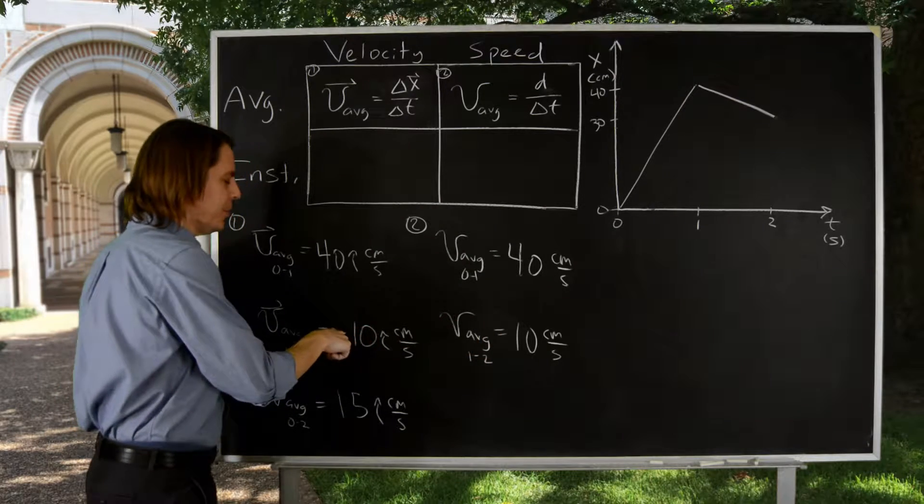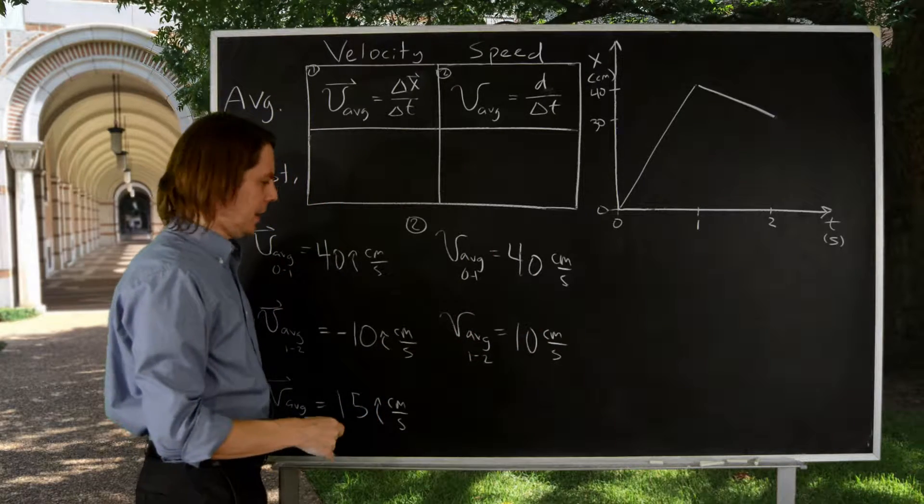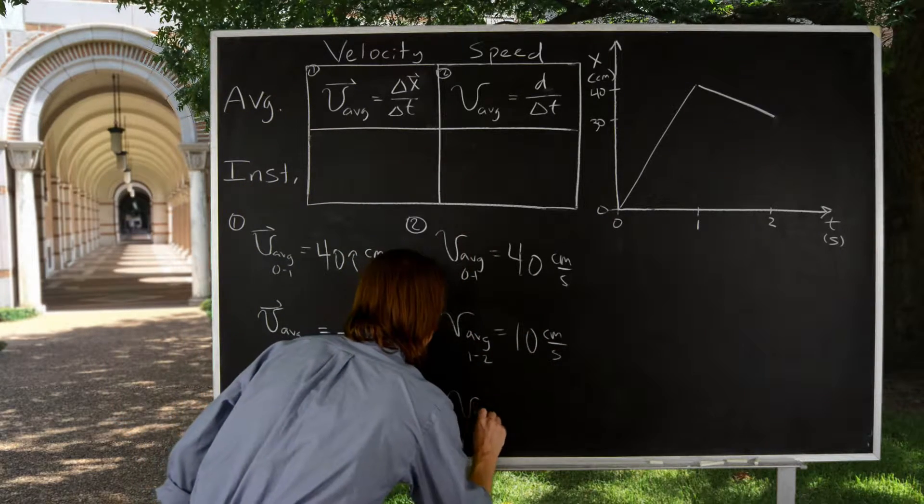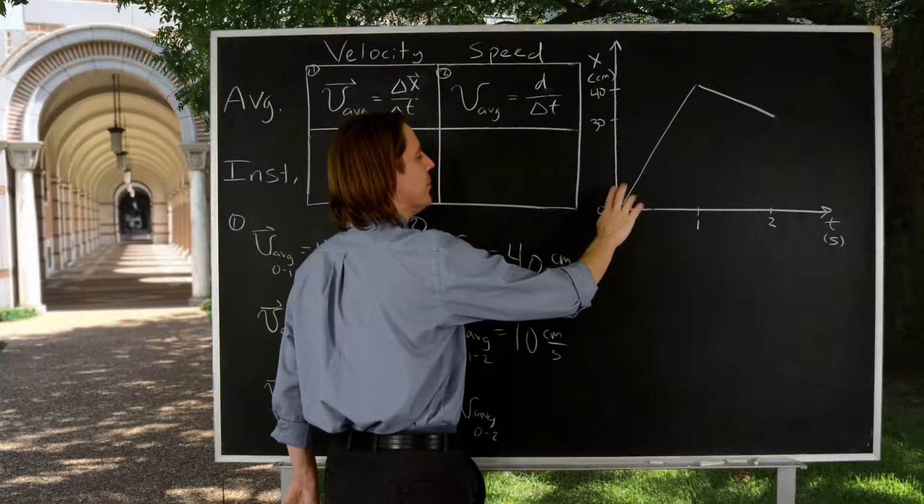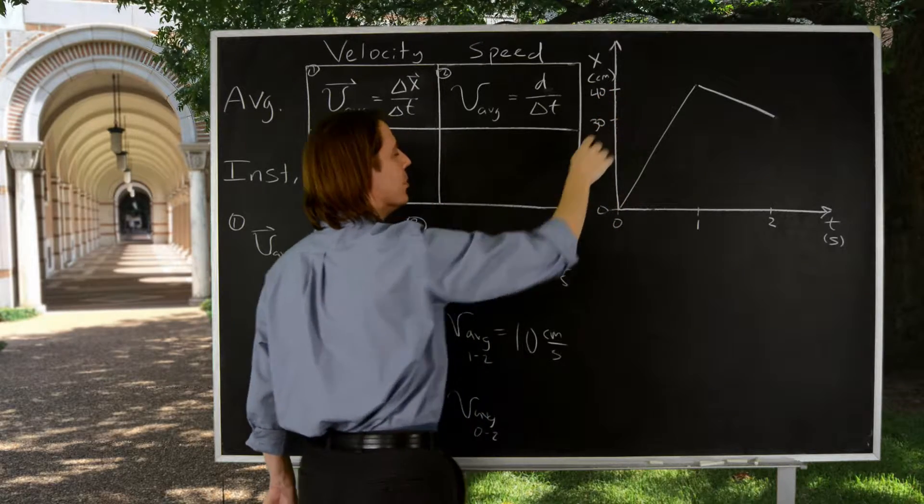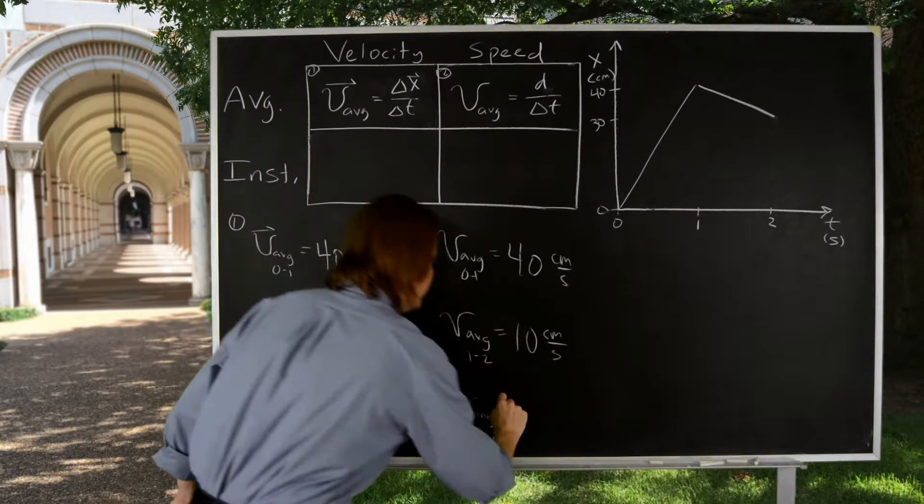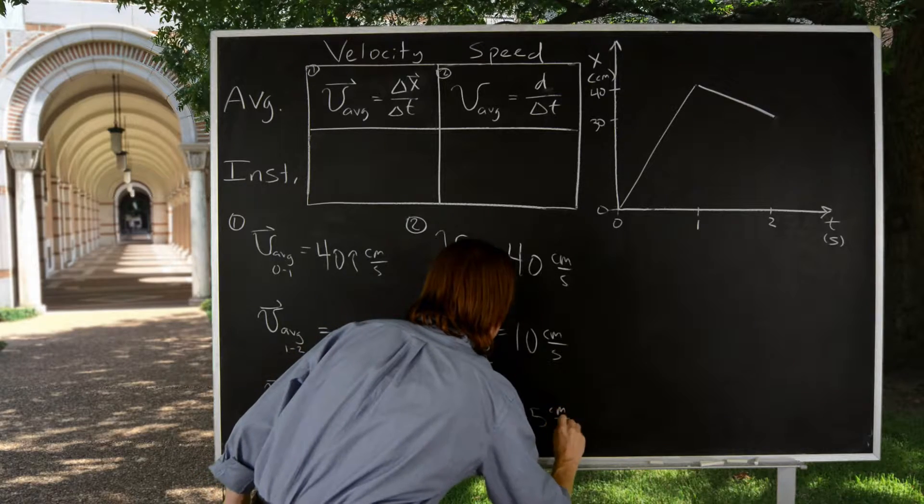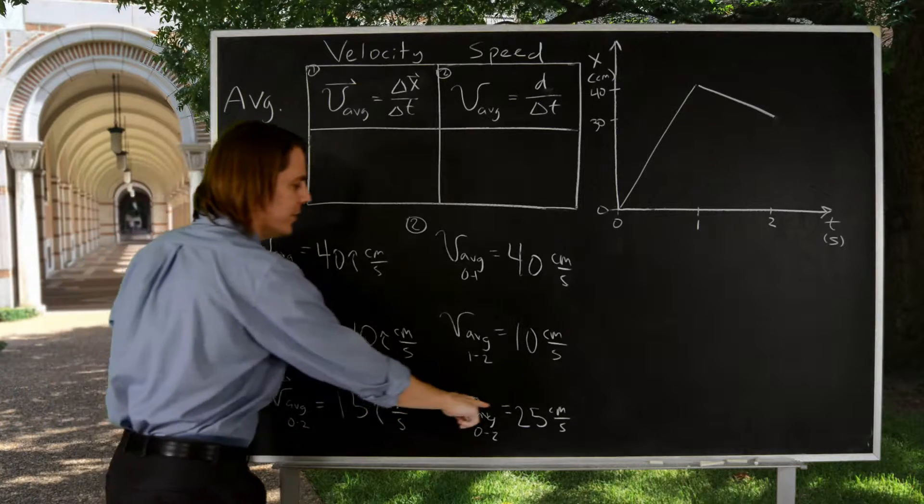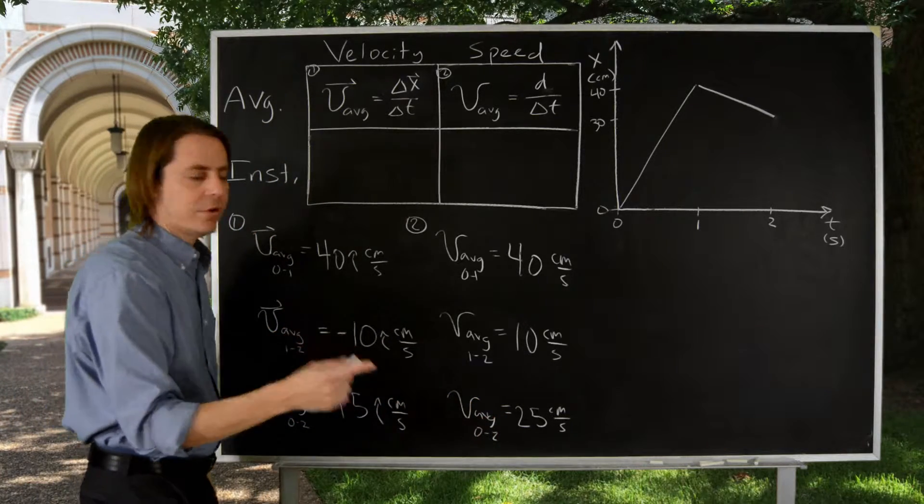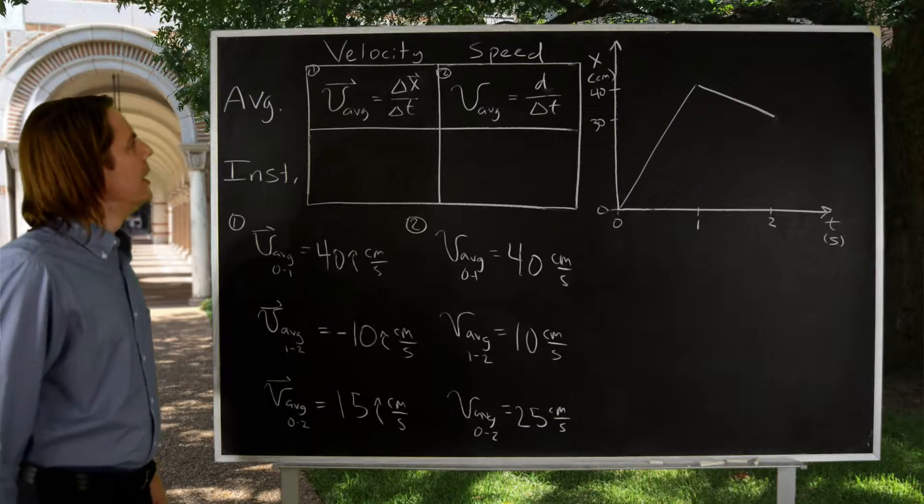In this case, it was negative here because this is a vector. We were indicating direction for velocity. For speed, we don't care about the direction. And then finally, the average speed from 0 to 2, that would be how far did it travel. It went 40, and then it went 10 more. So it really went 50 in terms of distance. Divided by delta T is 2. So 50 over 2 is 25 centimeters per second. The velocity for the entire trip is smaller than the speed. That's because it spent some of its time going backwards.